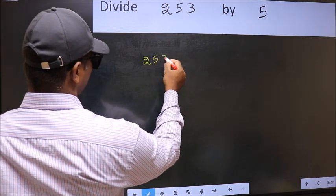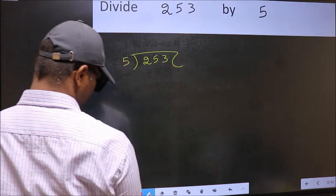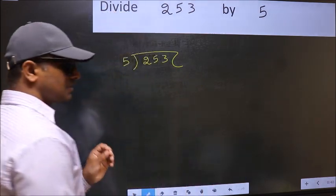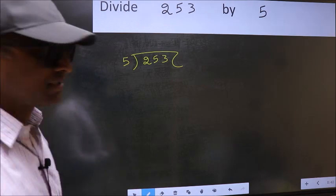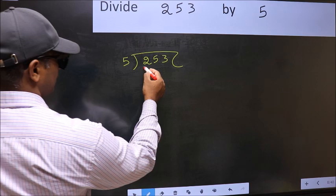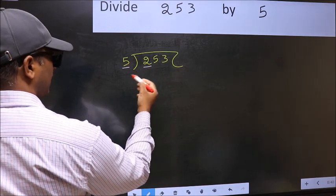253 and 5 here. This is your step 1. Next, here we have 2 and here 5. 2 is smaller than 5.